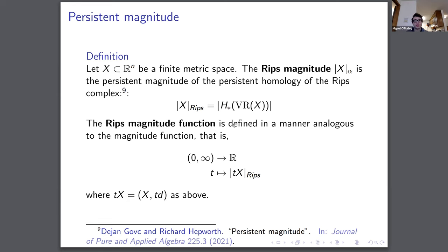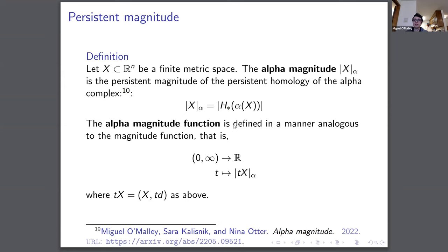There are limitations here. There's no statement that we don't need very high-degree homologies for the Rips complex, and that becomes troubling for spaces of high cardinality — it's very challenging to use for data sets. So what we do is replace the Rips complex with the alpha complex. This allows us, in spaces of fairly high cardinality as long as we're in low dimension, to leverage the alpha complex's restriction on how high the homology actually goes.